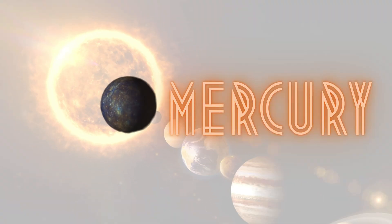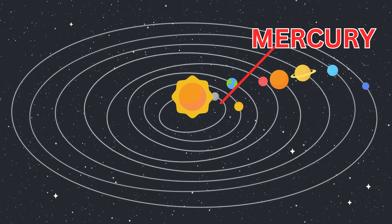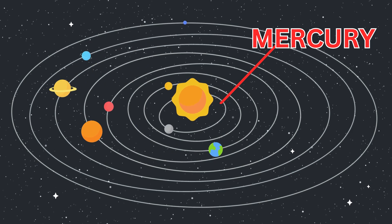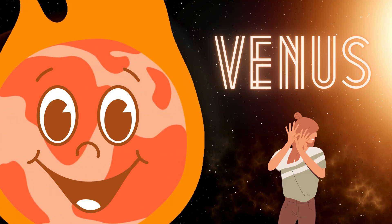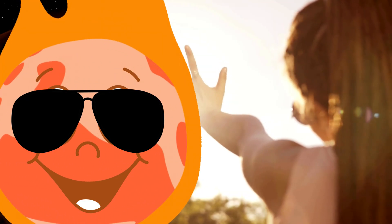First comes Mercury, hot and small, zooming round the sun, it's the fastest of all. Then comes Venus, shiny and bright, it's the hottest planet, what a sight!